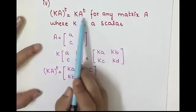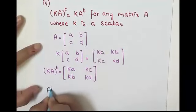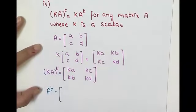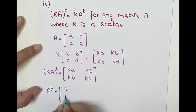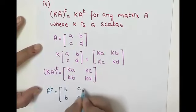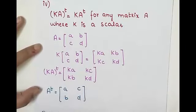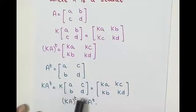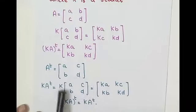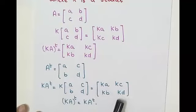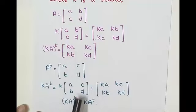Solving the right-hand side: first take the transpose of A, which gives A^T = [a, c; b, d], then multiply scalar K with A^T to get [Ka, Kc; Kb, Kd]. This is the same as the left-hand side, so (KA)^T = K·A^T is proved.